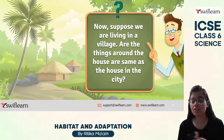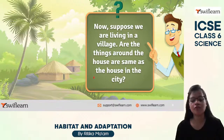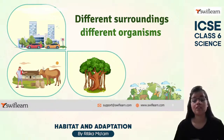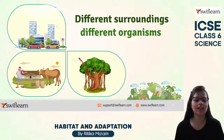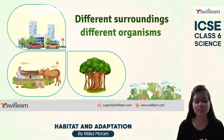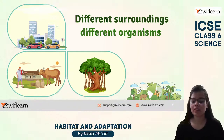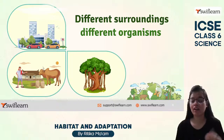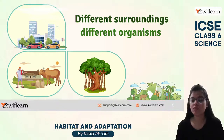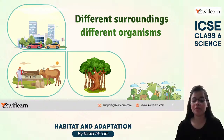In a village, we would see farms more frequently than big vehicles. We would also commonly see animals like cows, buffaloes, goats, and big farms. Different surroundings have different organisms. In a city we see big vehicles, whereas in a village, animals like cows, buffaloes, and goats are more commonly seen. The dress and occupations also differ between the two.